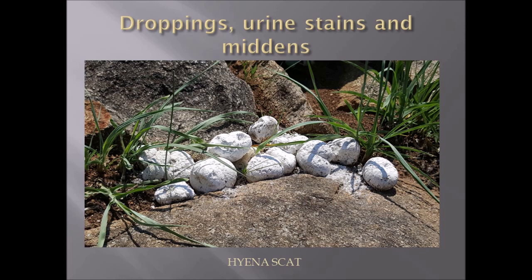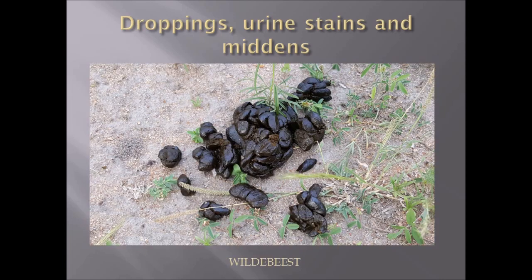Here we have hyena scat. Hyena scavenges a lot of bone — they have very powerful jaws and can therefore process bones quite easily. So you will often find in a hyena midden a lot of white scat.